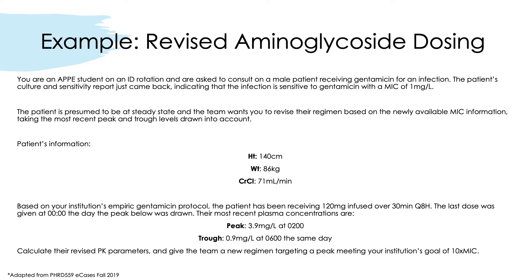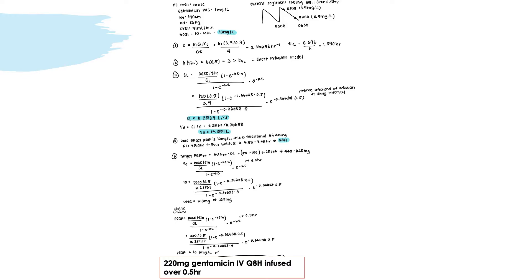Next is the revised aminoglycoside dosing regimen. You'll be using the right-hand side of the equation sheet, and this case is also from one of the e-cases last fall. Feel free to pause the video to review the question and record the values. We list out all patient factors given, the goal of peak-to-MIC greater than 10 (so 10 mg/L), the current regimen, and diagram out the peaks and troughs provided.